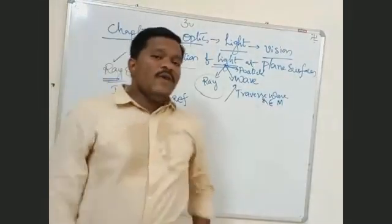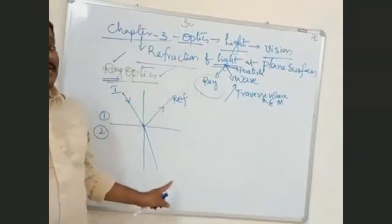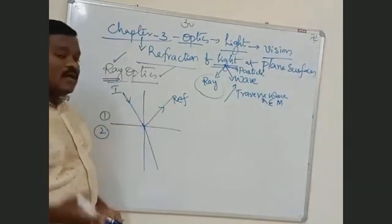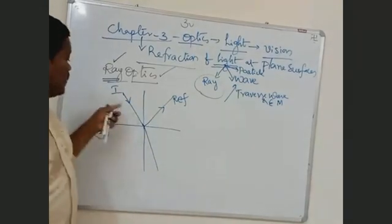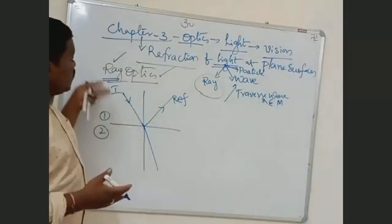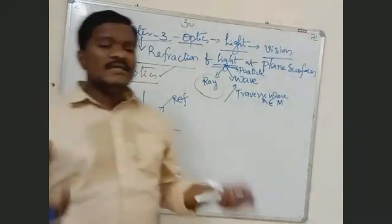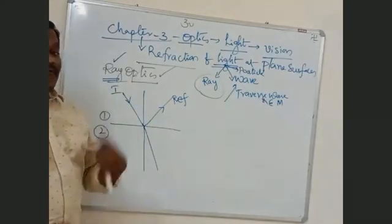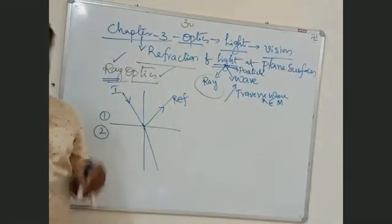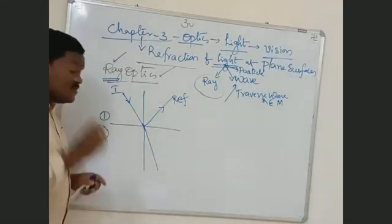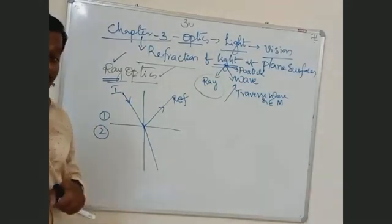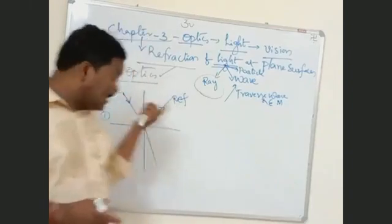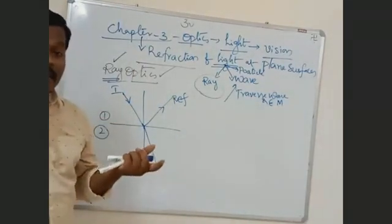The term 'refraction' is used specifically for light. For other waves, when a wave travels from one medium to another, we call it transmission. But for light, we call it refraction — because there is an important parameter that plays a key role. Can anyone name that parameter?